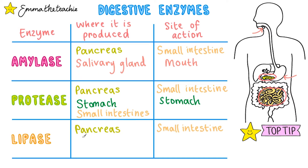Lipase is also produced in the small intestines. Different to the others, its only site of action is the small intestines. This makes sense when you look at the fact that the pancreas empties its digestive enzymes into the small intestine, and that's the only other place that they are made — so that's the only place where it works.